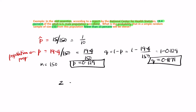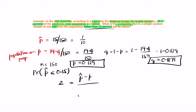We need the probability of p-hat less than 15 percent, which is P(p-hat < 0.15). Using the z-score formula: z equals p-hat minus p, divided by the square root of p times (1 minus p) divided by n. So p-hat here is 0.1, and p is 0.15.